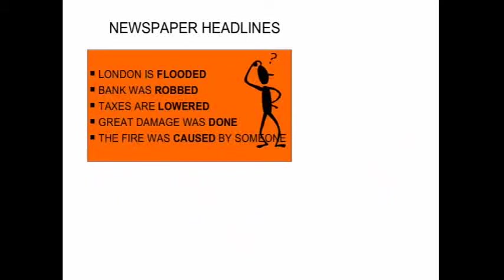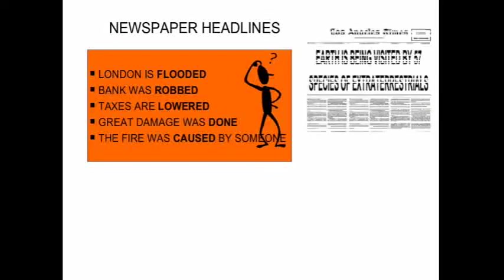There is one more way in which passive voice is used — in newspaper headlines. Examples: 'London is flooded', 'Bank was robbed', 'Taxes are lowered', 'Great damage was done', 'The fire was caused by someone'. These have double verbs and are in passive form. Sometimes in newspaper headlines the helping verb is not written, but only the past participle form — yet it is understood that the sentence is in passive voice. Example: 'Earth is being visited by 57 species of extraterrestrials'.